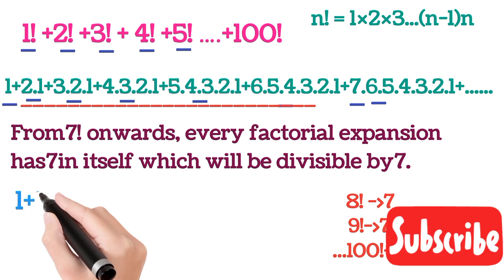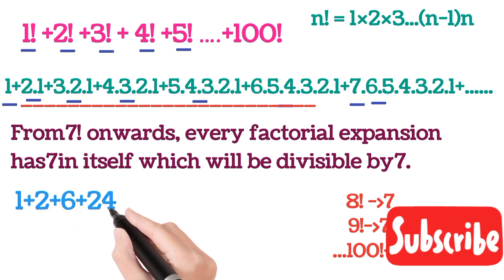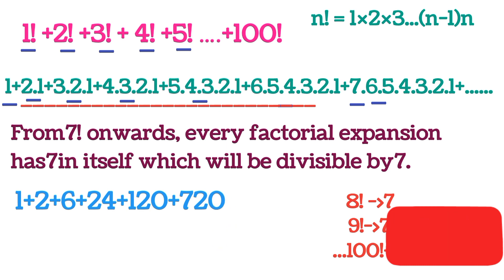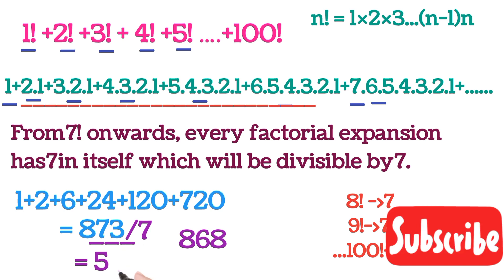On solving this we will get 1 plus 2 plus 6 plus 24 plus 120 plus 720, which will be equal to 873. Now we have to divide it by 7. This will give the remainder of 5 because 868 is totally divisible by 7 and we have 873.